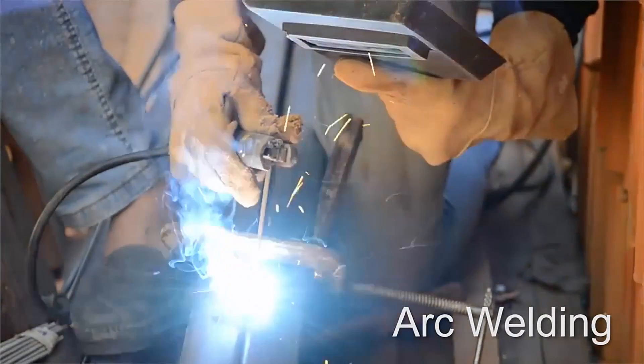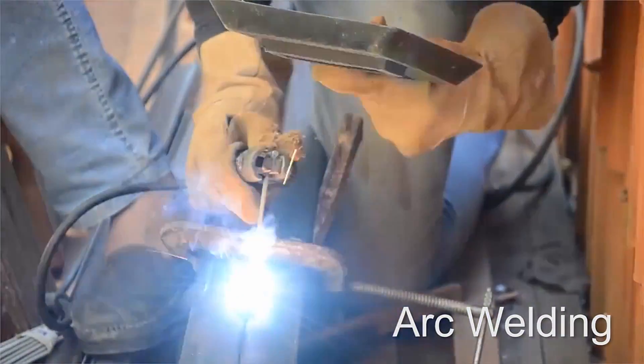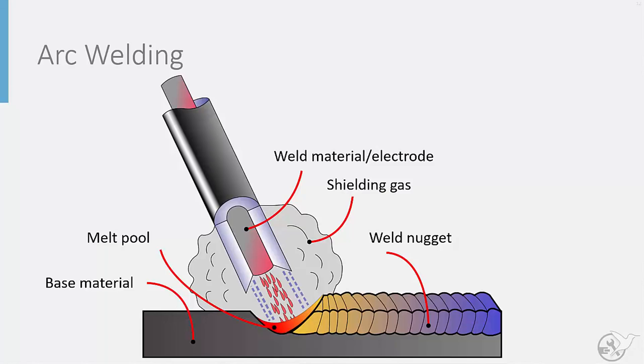Here we see a typical arc welding process. What is happening during this process is that the rod of weld material is acting as an electrode that carries a current. As the electrode is brought near the base material, an electrical arc forms which melts the tip of the electrode, depositing it in a melt pool.